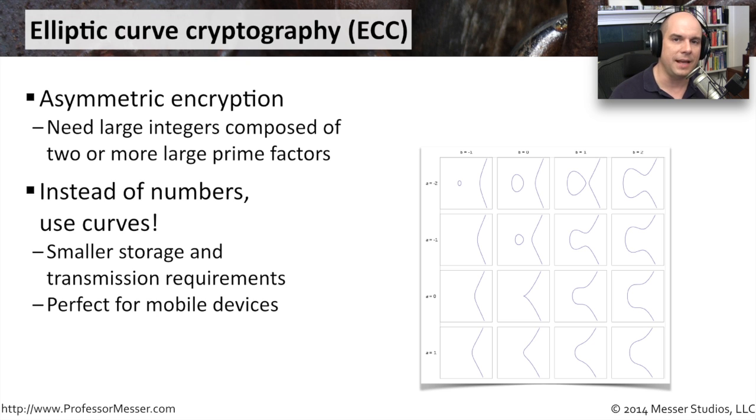At the end of the day, what this means is that this is much simpler to calculate. So it takes fewer storage requirements. It's easier to transmit, especially over mobile connections. And mobile devices that already don't have a lot of memory and a lot of CPU can now use a simpler way of performing this asymmetric encryption.